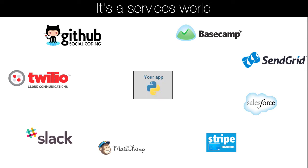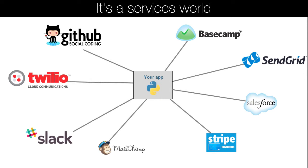So if we want to connect our app to these types of services and many, many more, we're going to need to learn how to work with services in Python. And that's what consuming HTTP and SOAP services in Python is all about. So whether you want to talk to GitHub, Stripe, Basecamp, or even that old-fashioned SOAP service that runs the back-end of your business, you're going to learn how to do that here.